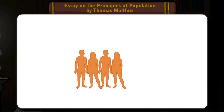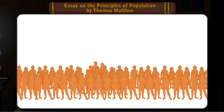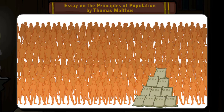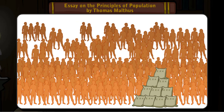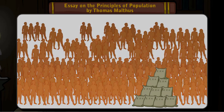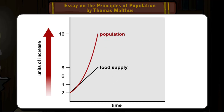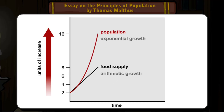In this book, Malthus observed that populations of people tend to rise exponentially, but food supplies rise only arithmetically. Eventually, the people would run out of food and their growth would be slowed. This suggested to Darwin that all organisms would also grow exponentially, but that food supplies or other resources would limit the growth.